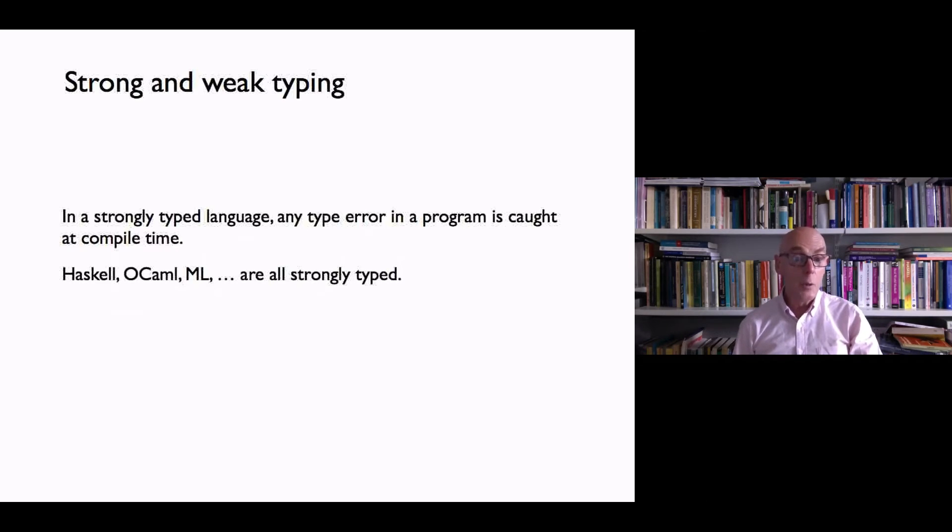We don't have to run the program in order to find the error, and many functional programming languages - Haskell, OCaml, ML, F sharp - are strongly typed in this sense. Type errors are caught at compile time without running the program.